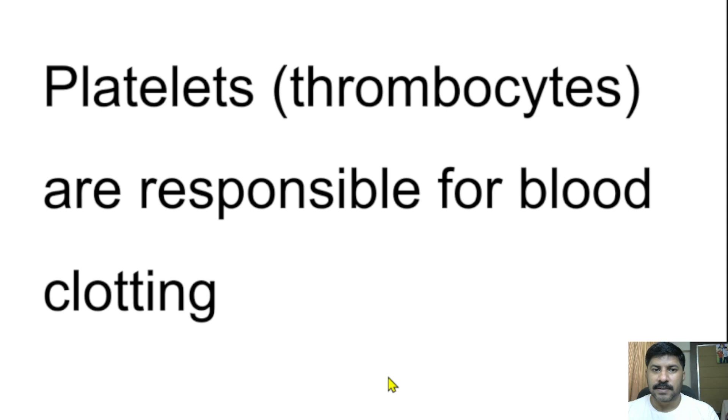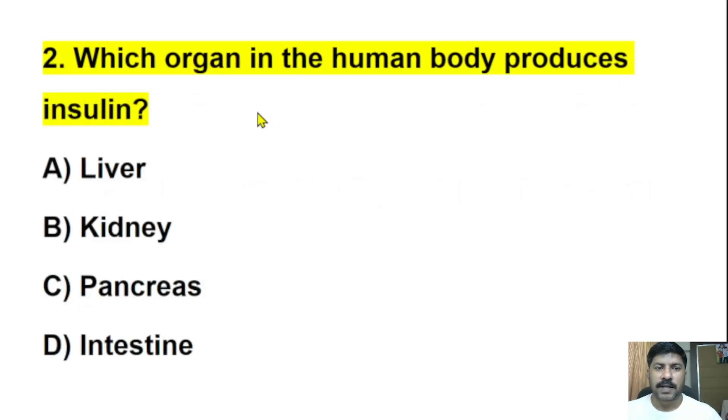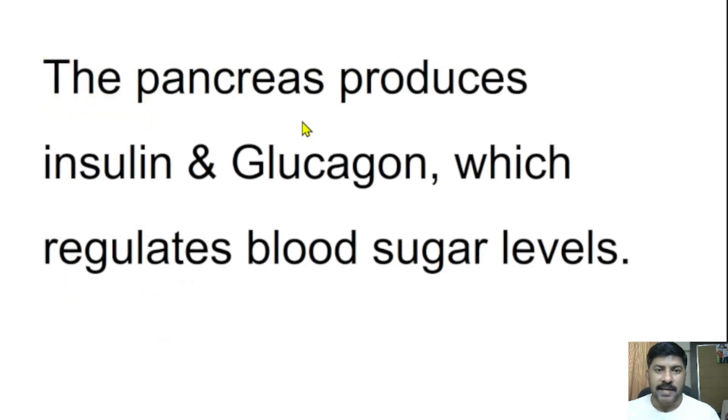Second question: Which organ in the human body produces insulin? The correct answer is pancreas. Options were liver, kidney, pancreas, intestines. The pancreas produces insulin and another hormone, glucagon, which regulate blood sugar levels. Insulin helps to reduce blood sugar levels.